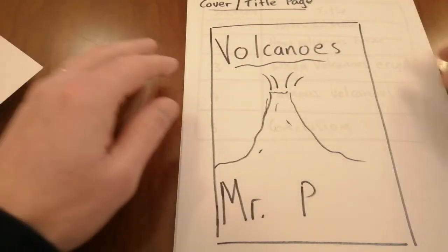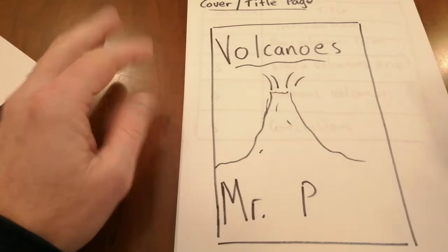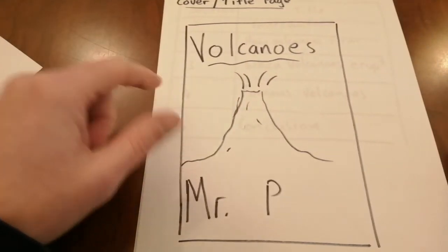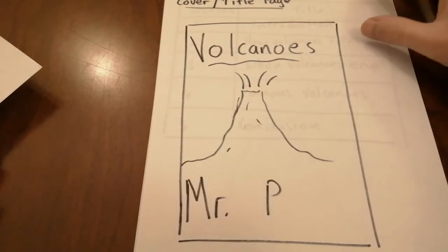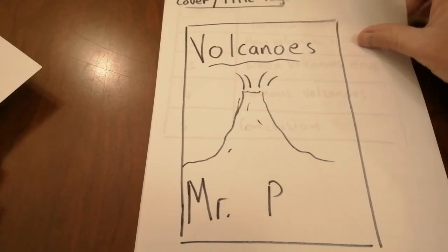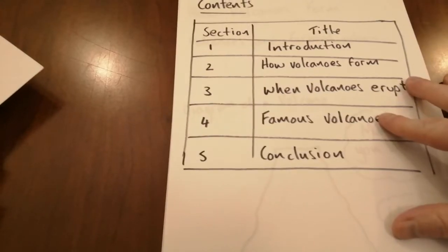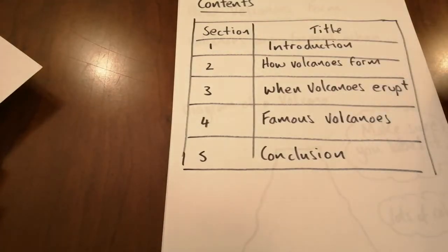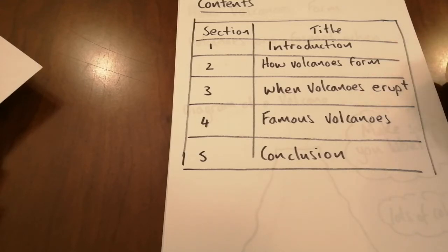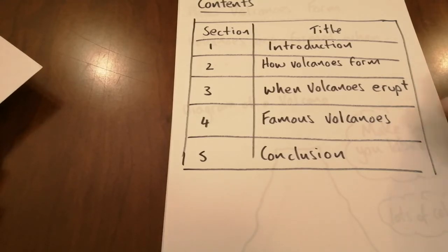Nice and simple, nice and clear, not too much included in it. The best thing about a cover page though would be to include as much colour as you can to make it eye-catching for whoever's going to read it. Then I've got my contents page. I've written down the section and the title. I've decided that my sections are going to be the introduction, then one on how volcanoes form, then one on what happens when volcanoes erupt, then a little bit on famous volcanoes around the world, and I'm going to finish it all off with a conclusion.